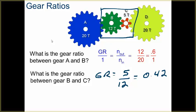Notice how my gear ratios are less than 1, because each time I'm going from a big gear to a small gear, from a bigger gear to a small gear. So your gear ratios are going to be less than 1.